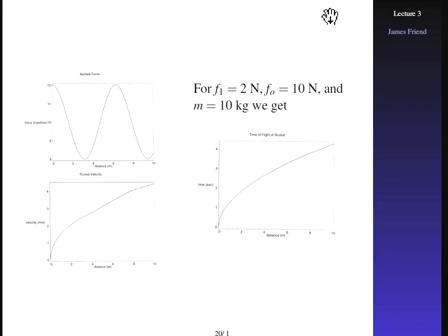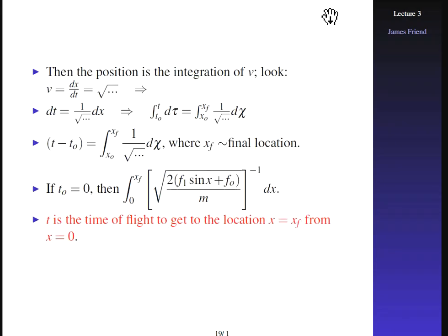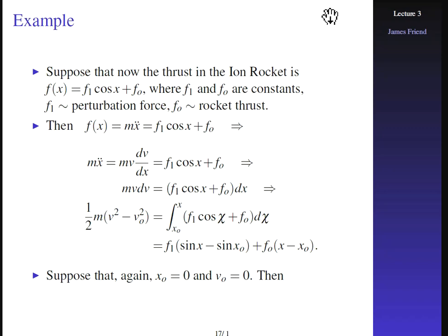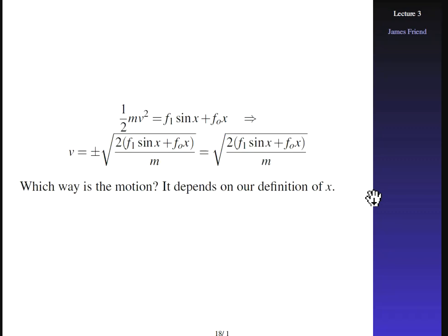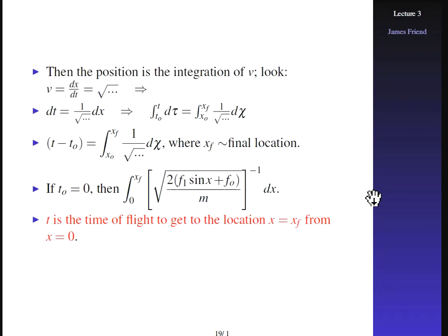Welcome back to part two of lecture three. We were talking about this particular problem where it's rather complicated. The ion rocket has a force applied to it that's a function of position. The applied force on this particular system is a function of x. With the rocket problem, we had just one degree of freedom, moving in a rectilinear fashion — one direction. That's the reason we're using scalars here, just to avoid complexity.